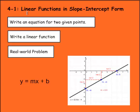We're on lesson one of chapter four, which is linear functions in slope-intercept form. First, we'll write an equation for two given points, then we'll write a linear function, then we'll do a real-world problem.